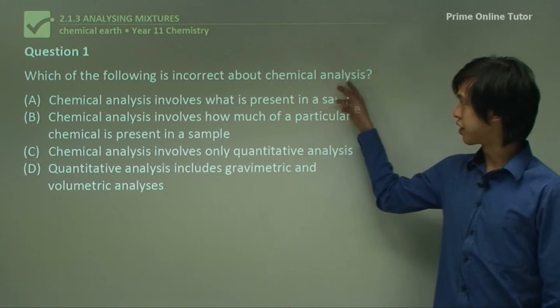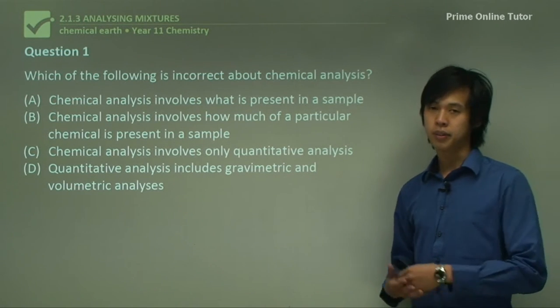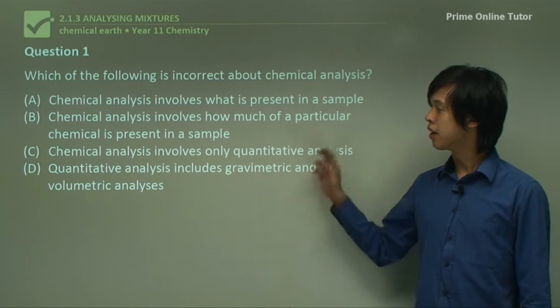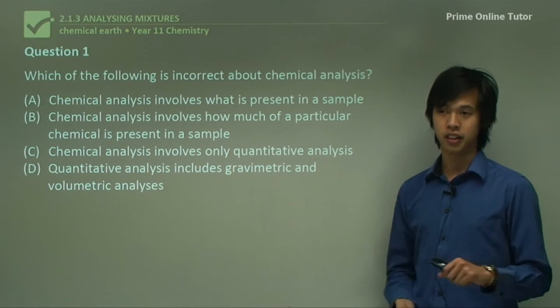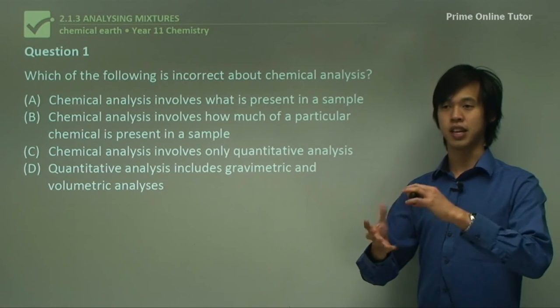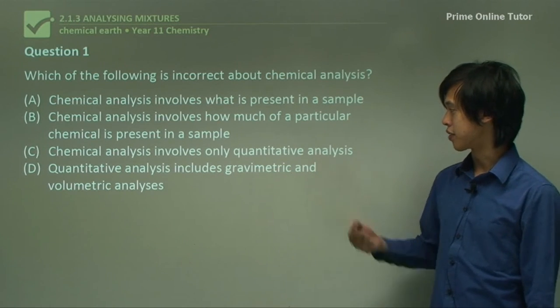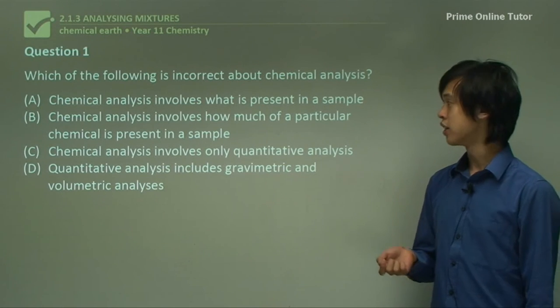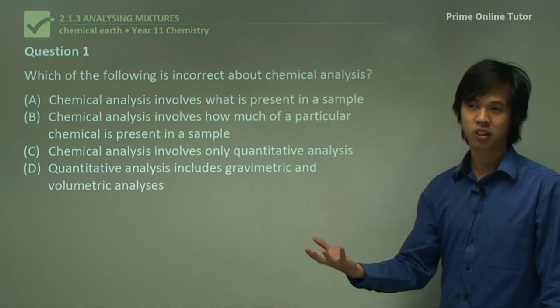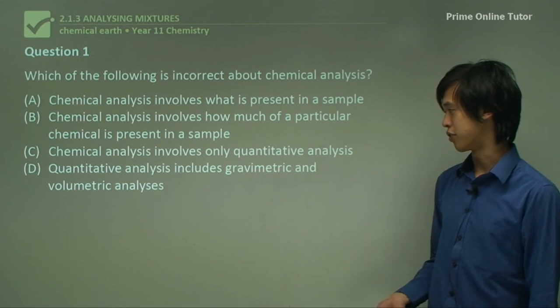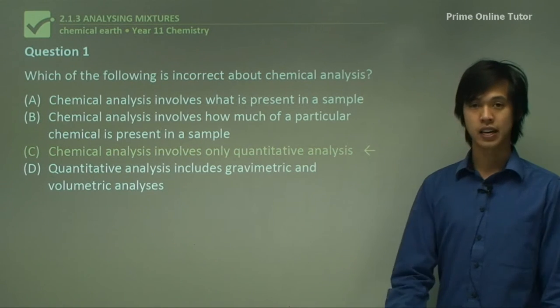So which of the following is correct about chemical analysis? Chemical analysis involves what is present in a sample. Yes, that's true. Chemical analysis is all about finding out what's inside a particular sample. B, chemical analysis involves how much of a particular chemical is in a sample. Yes, that's a sub-branch of chemical analysis. We can actually work out how much of a type of chemical will be in a sample. So that's also part of chemical analysis. Chemical analysis involves only quantitative analysis. That's not true because it involves qualitative analysis as well. So we'll hold on to this one and see if the last one is more correct. Quantitative analysis includes gravimetric and volumetric analysis. So that's also true. So C is the incorrect one and it's our answer.